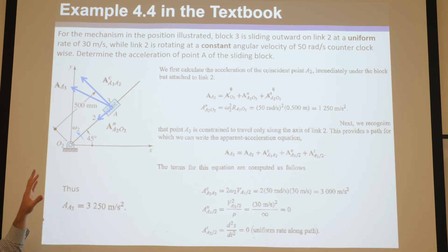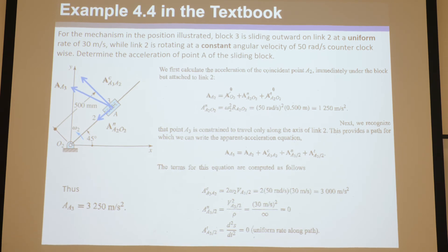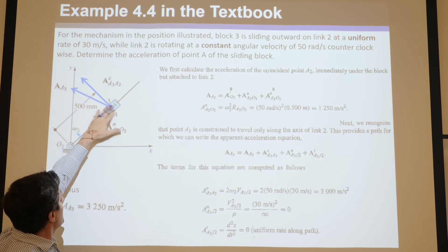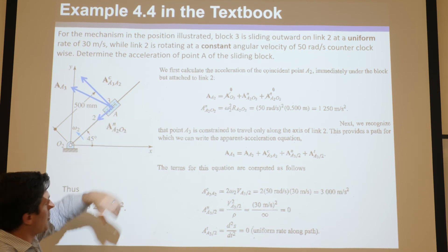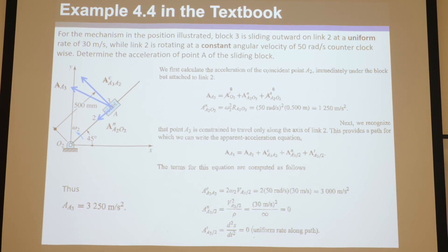So all you really have is the normal centripetal acceleration of A two plus the Coriolis term — that vector plus that vector — which points in that direction, and that's the answer. Be very careful: make sure you get the components and add them correctly. In this case, since they're perpendicular, you'd square them, add them, and take the square root to find the magnitude. Make sure you work with these as vectors.